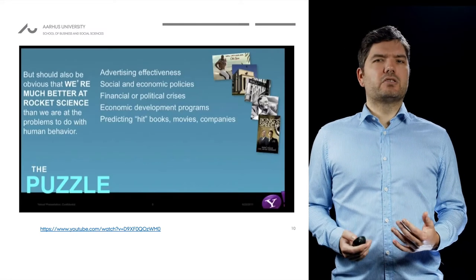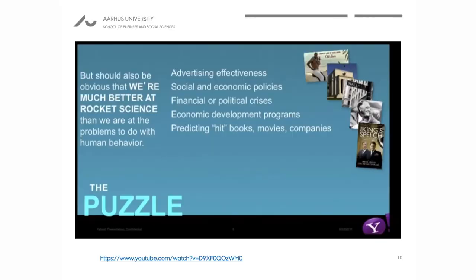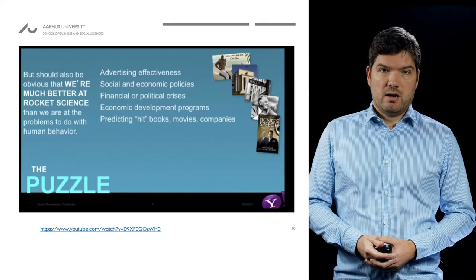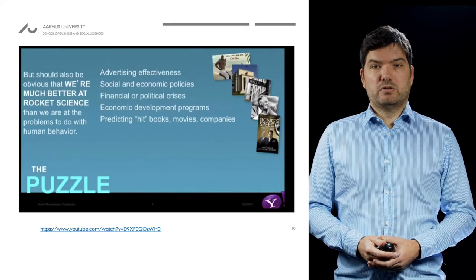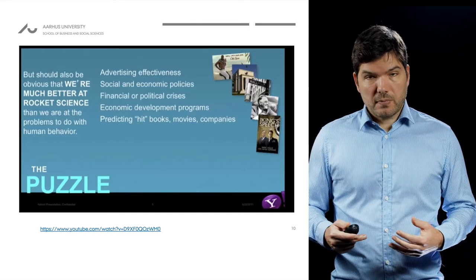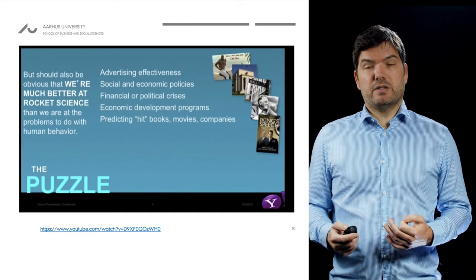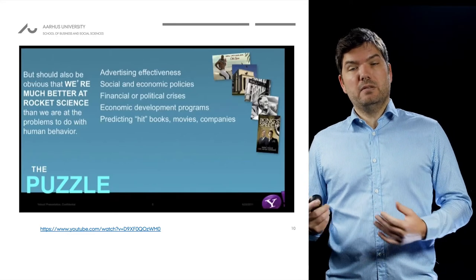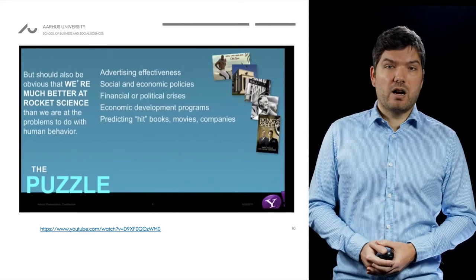We are in a particular situation: things seem obvious and we feel we should know. But we are much better at rocket science — a field that does not seem obvious. We can send rockets or even people to the moon, while figuring out what movie is going to be a hit, whether we should change the unemployment rate, or whether an advertisement actually works — those are really, really difficult questions, basically much harder than rocket science.